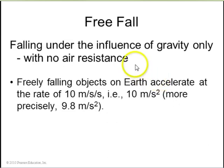Objects falling only under the influence of gravity with no air resistance accelerate at the rate of 10 meters per second per second. That's the same as writing 10 meters per second squared. Or more precisely, you can call this 9.8 meters per second squared if you measure it here on Earth.